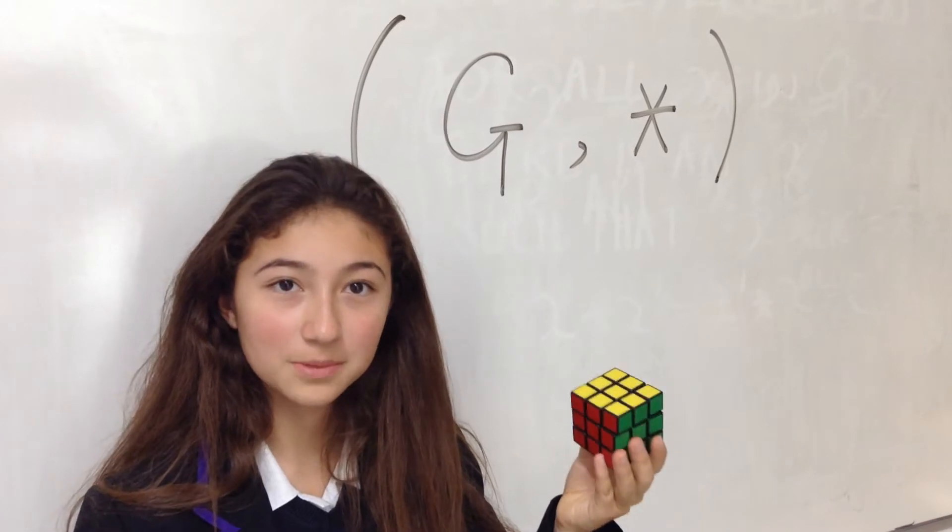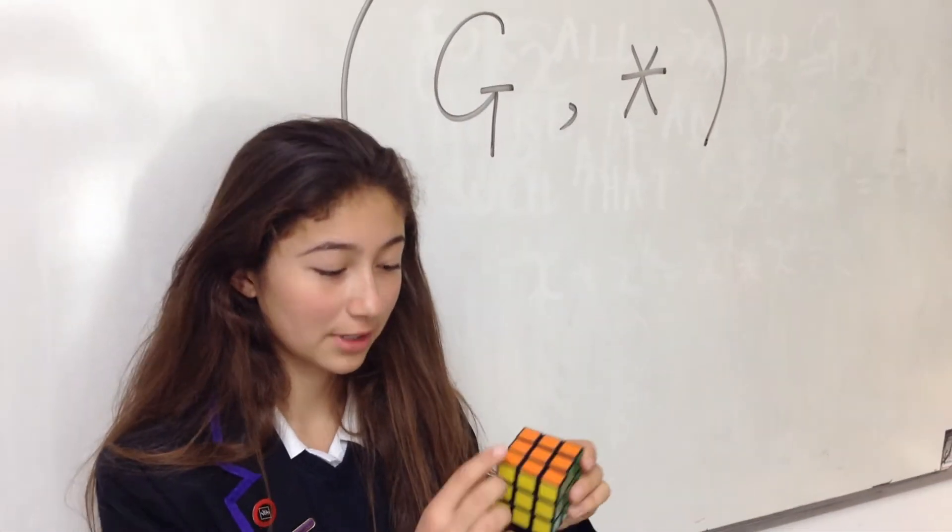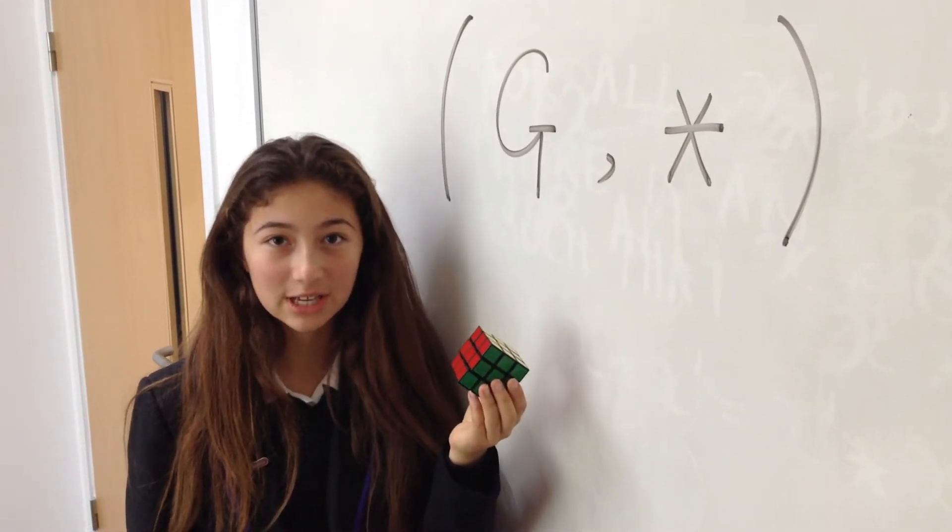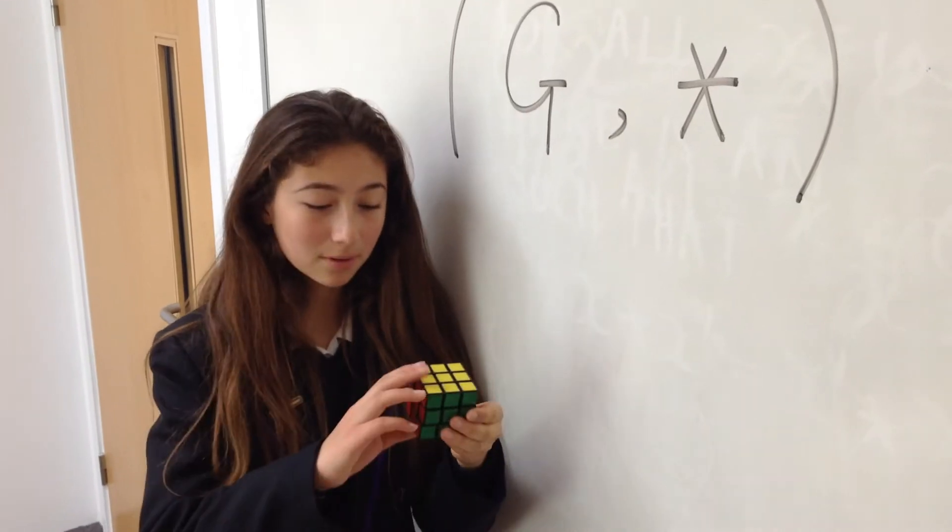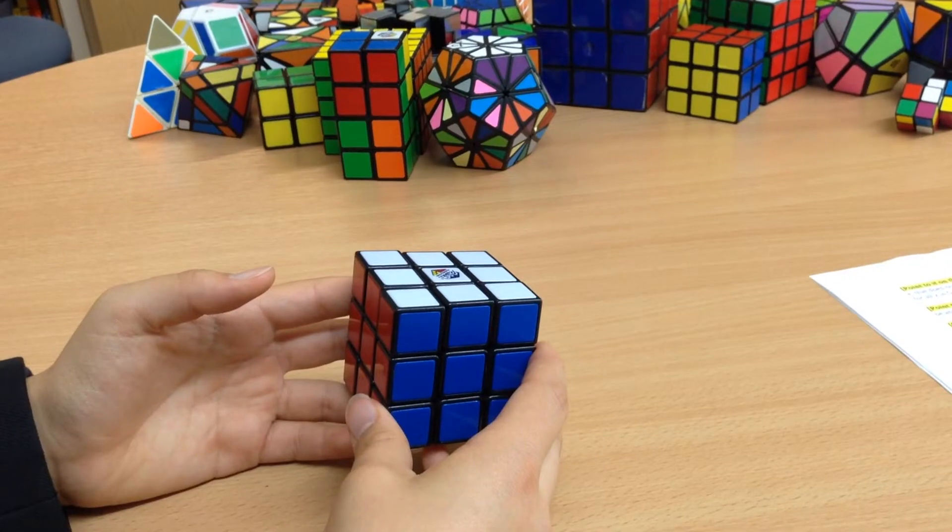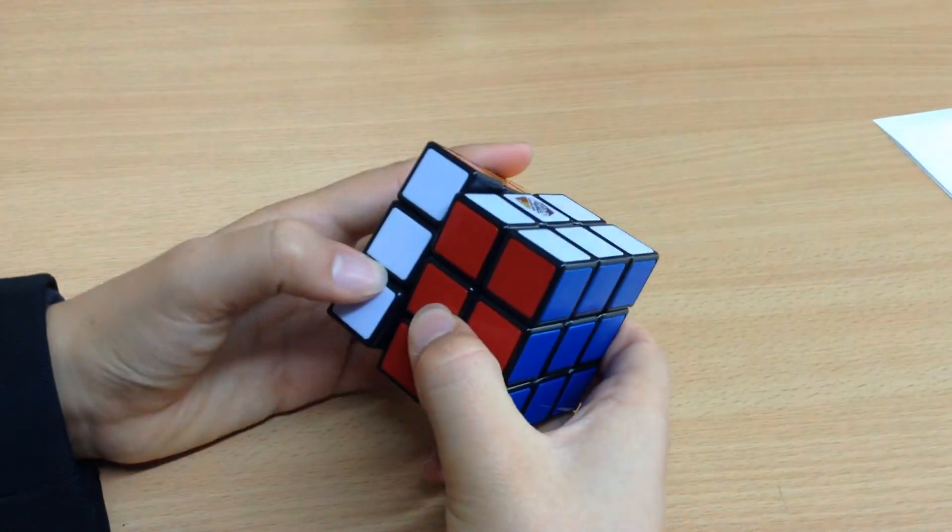With the Rubik's cube, G is the set of permutations of the faces of each individual cuboids. The binary operation is combining permutations together in order. For example, all permutations can be made up of six fundamental moves.